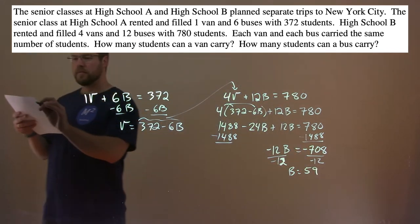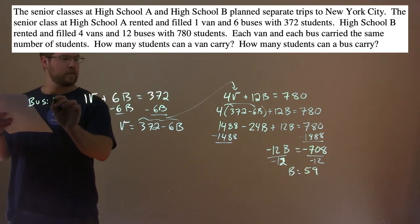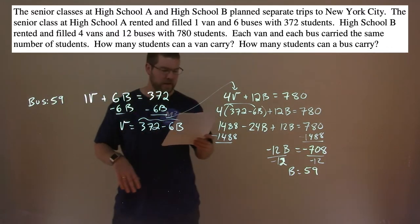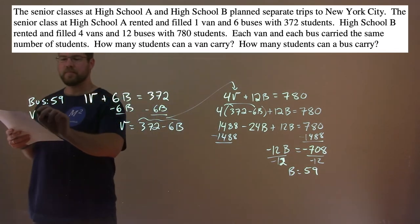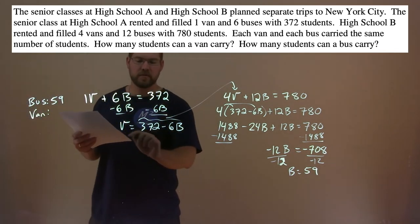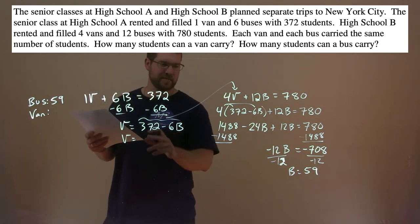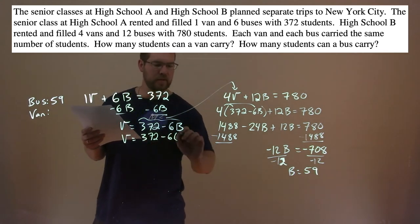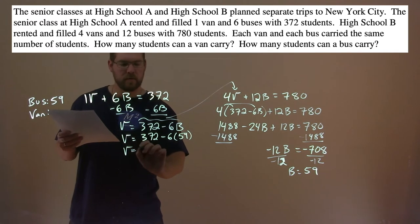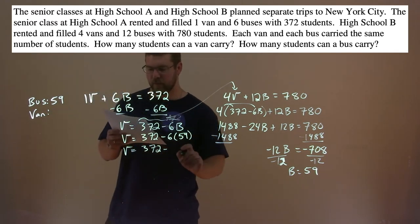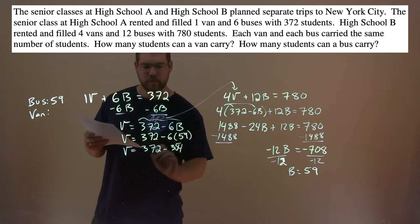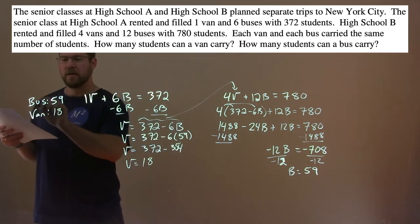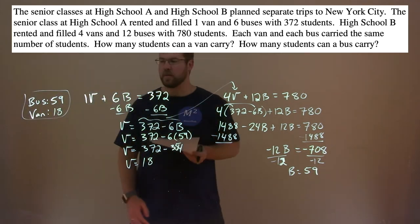Buses hold 59 students. Now we want to find how much the van holds. Using our adapted equation: V equals 372 minus 6 times 59. 6 times 59 is 354. And V equals 372 minus 354, which is 18. So the van has 18 students and the bus has 59 students.